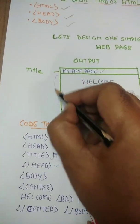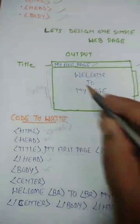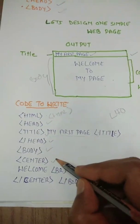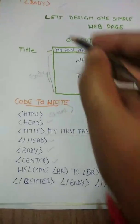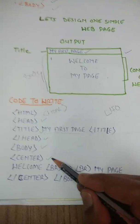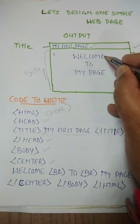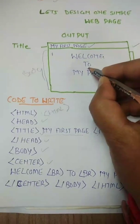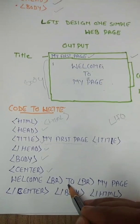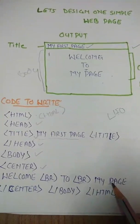This portion is called the body of the page, so we start with the body tag. The output shows the content centered on the page, so we use the center tag to align the text. Content normally starts from the left, but here we define the center tag. Then we write 'Welcome', followed by a BR empty tag to move to the next line, then '2', another BR tag, and then 'My Page'.